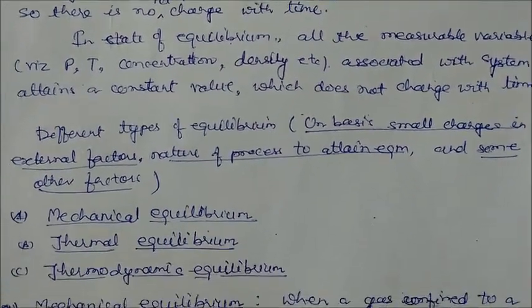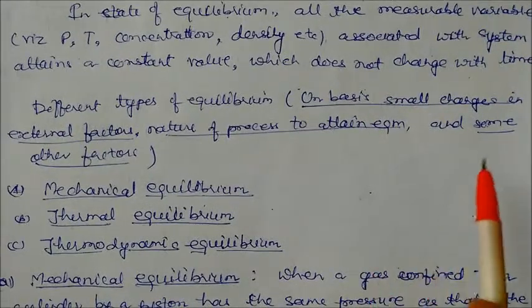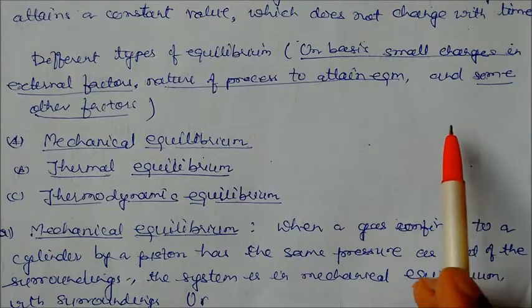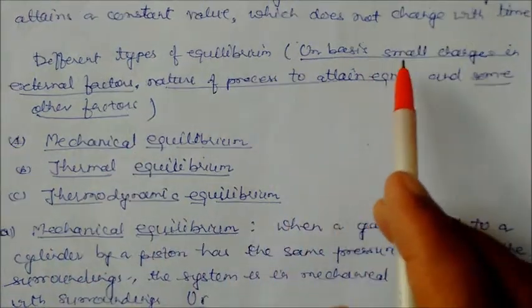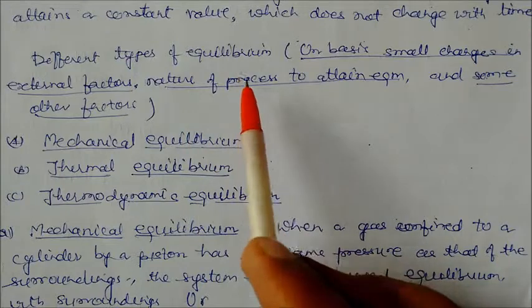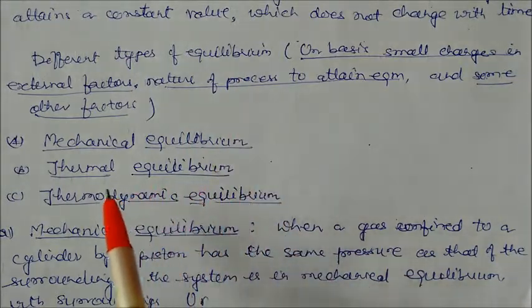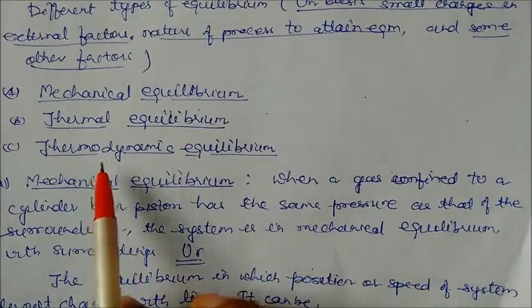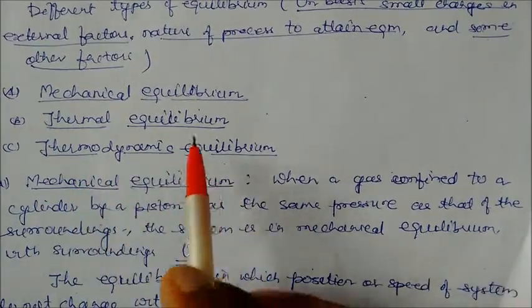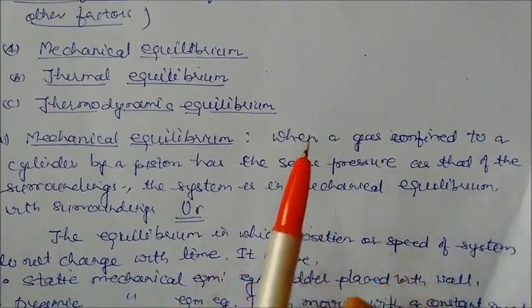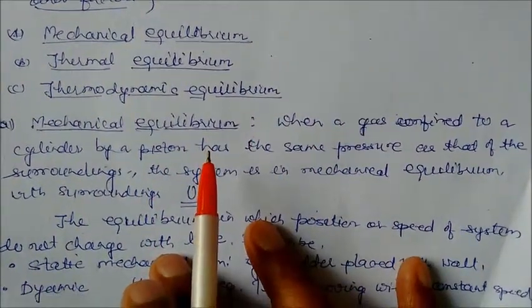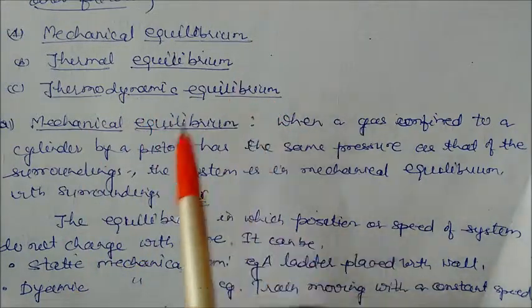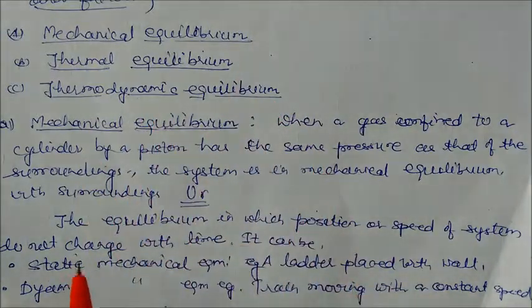On the basis of small changes in external factors, nature of the process to attain equilibrium, and some other factors, there are different types of equilibrium. These are: mechanical equilibrium, thermal equilibrium, and thermodynamic equilibrium. We will see a brief introduction and explanation of all these. Basically, we have to study thermodynamic equilibrium in detail.